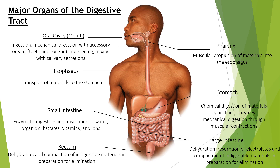The small intestine is involved in enzymatic digestion and absorption of water, organic substrates, vitamins, and ions. The rectum is involved in dehydration and compaction of indigestible materials in preparation for elimination. The pharynx, stomach, and large intestine influence the muscular propulsion of materials into the esophagus. The stomach performs chemical digestion by acids and enzymes, and mechanical digestion from muscular contractions.